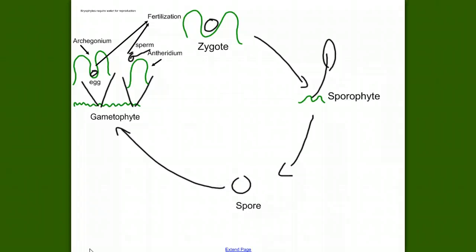What is the ploidy of a spore? Spores are always haploid. So, the spore grows through mitosis and cell division to make a gametophyte. And since mitosis doesn't change our ploidy, the gametophyte is haploid. The gametophytes make gametes, egg and sperm, and the gametes have to be haploid.